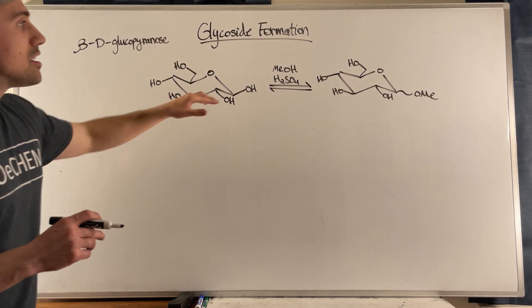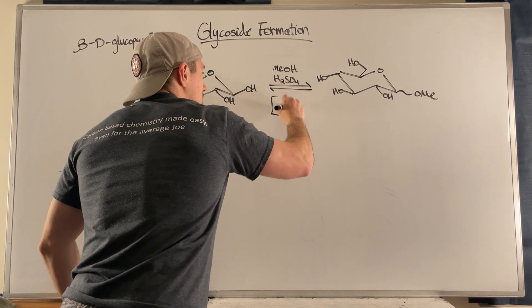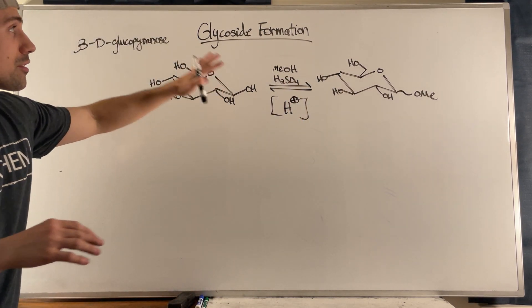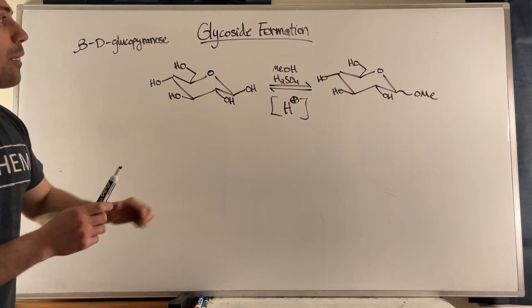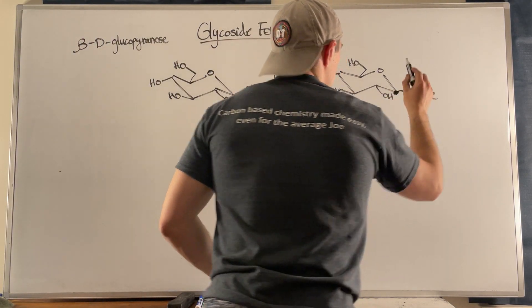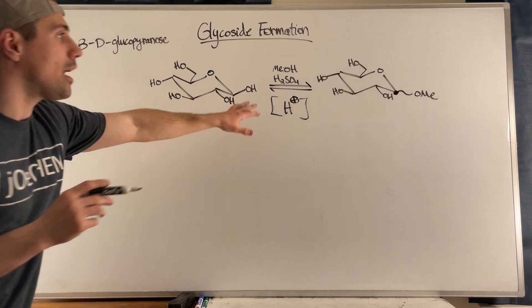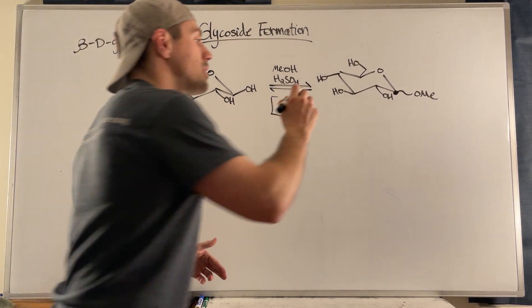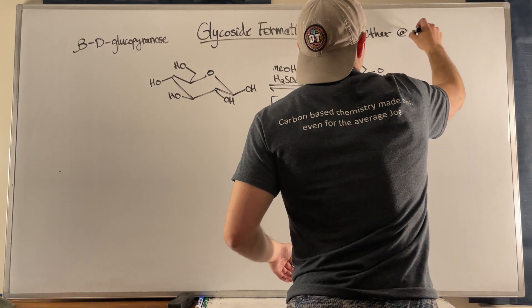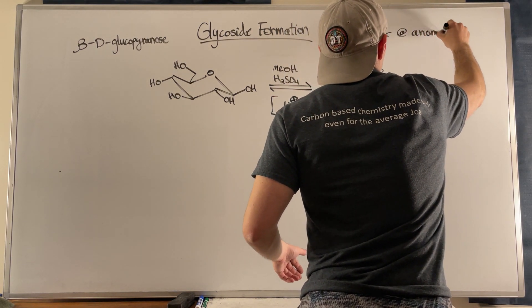And what you'll see is, what this really shows is we have an equilibrium set up with acidic conditions. That's key, right? That's key for glycoside formation. And nothing really changed except for what you see at the anomeric position, right? Instead of an OH, we have an ether, right? So really, it's kind of like an ether formation at the anomeric carbon.